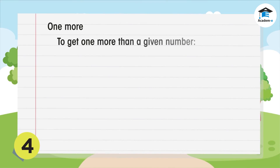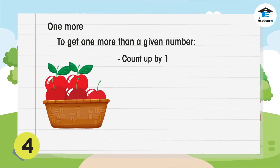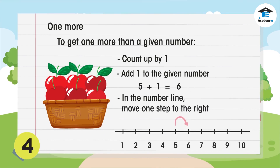To get one more than a given number, you just have to count up by one, or add one to the number. On the number line, you move one number to the right.